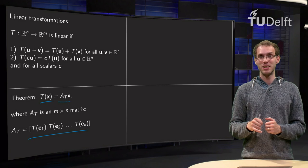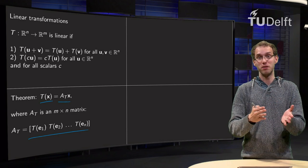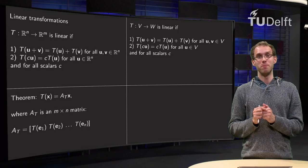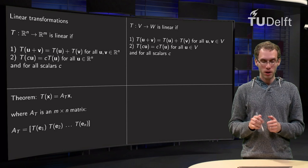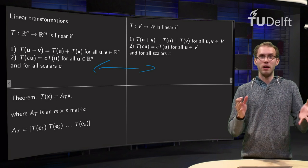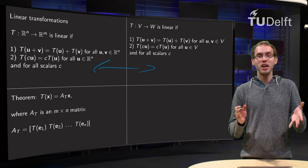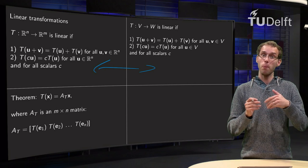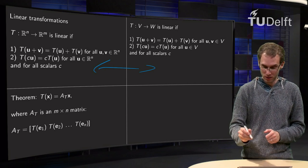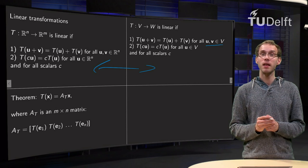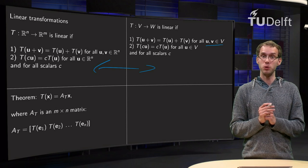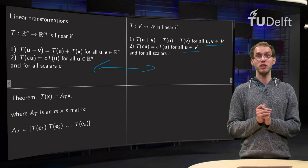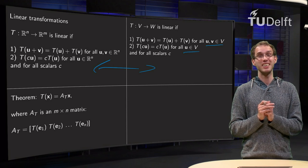Now we want to generalize to linear transformations from some general vector space V to another vector space W. T from V to W is linear if—look at this—they are almost the same: T(u + v) = T(u) + T(v) for all u and v in the vector space V, and T(cu) = c·T(u) for all u in V and for all scalars c. Only the domain changes. The definition of linearity is exactly the same.